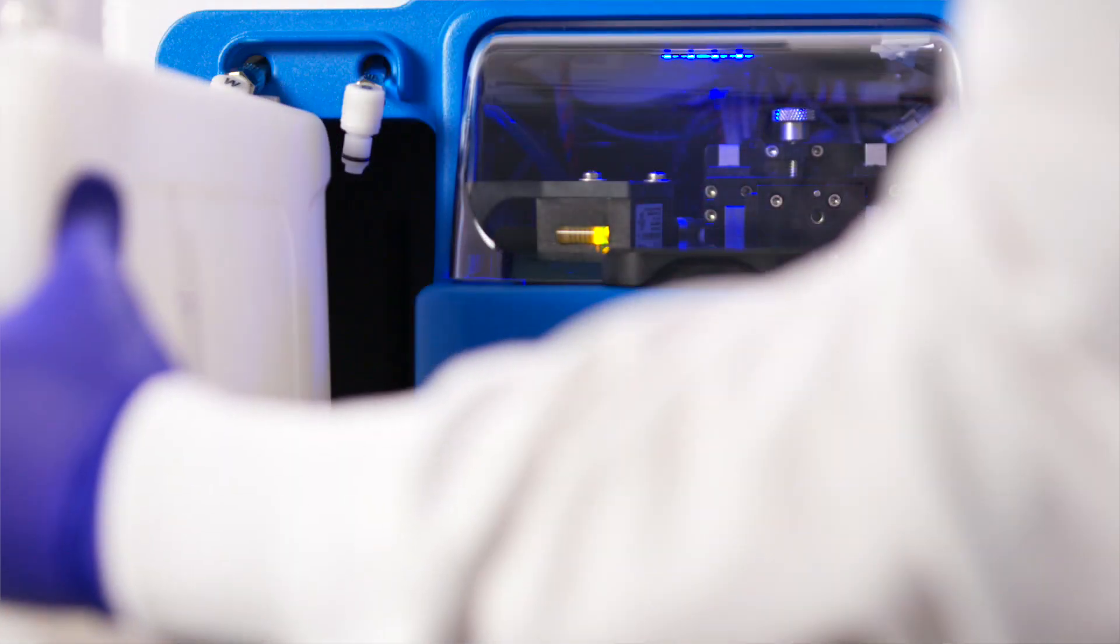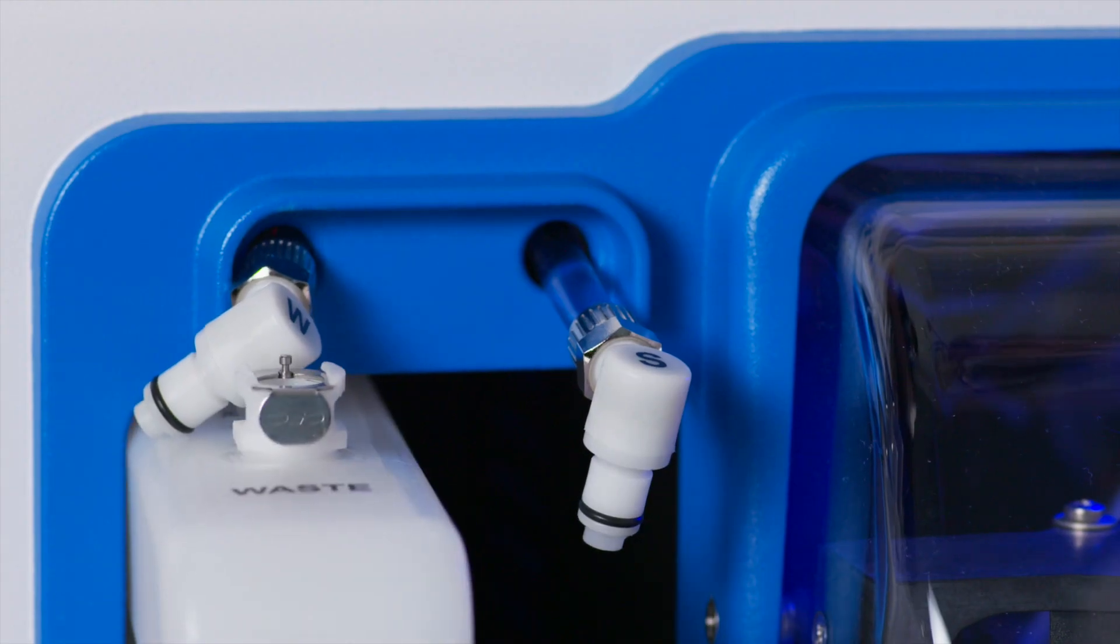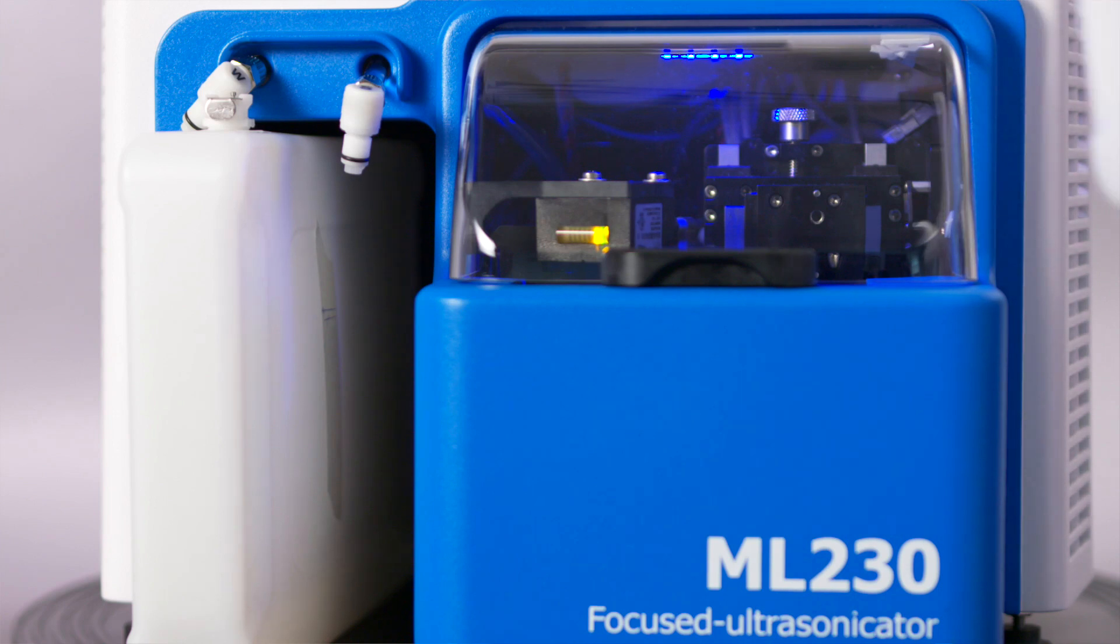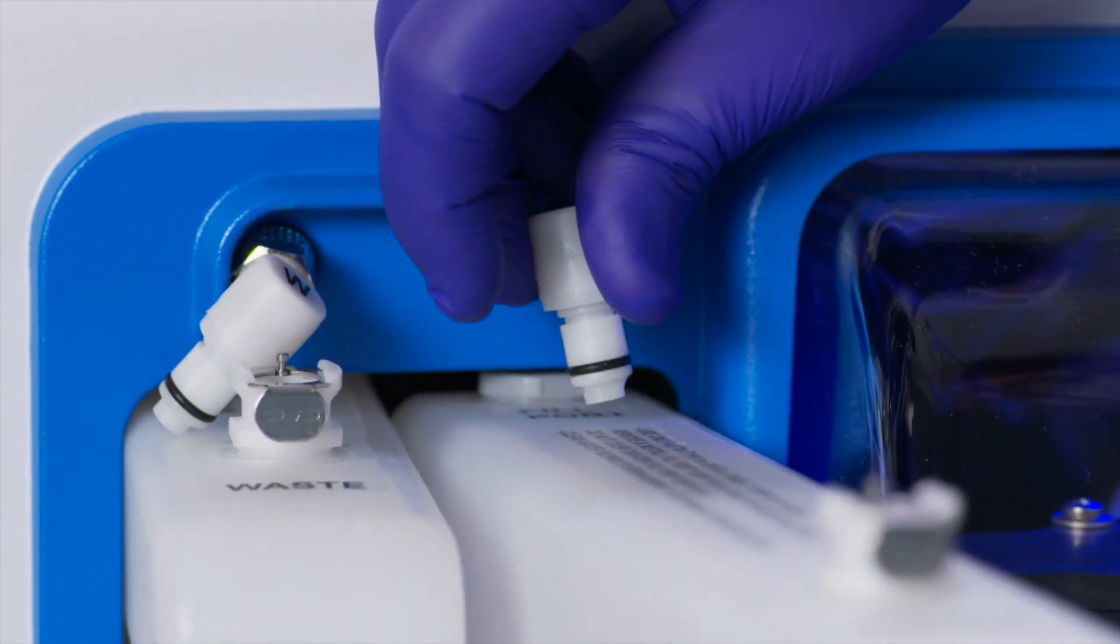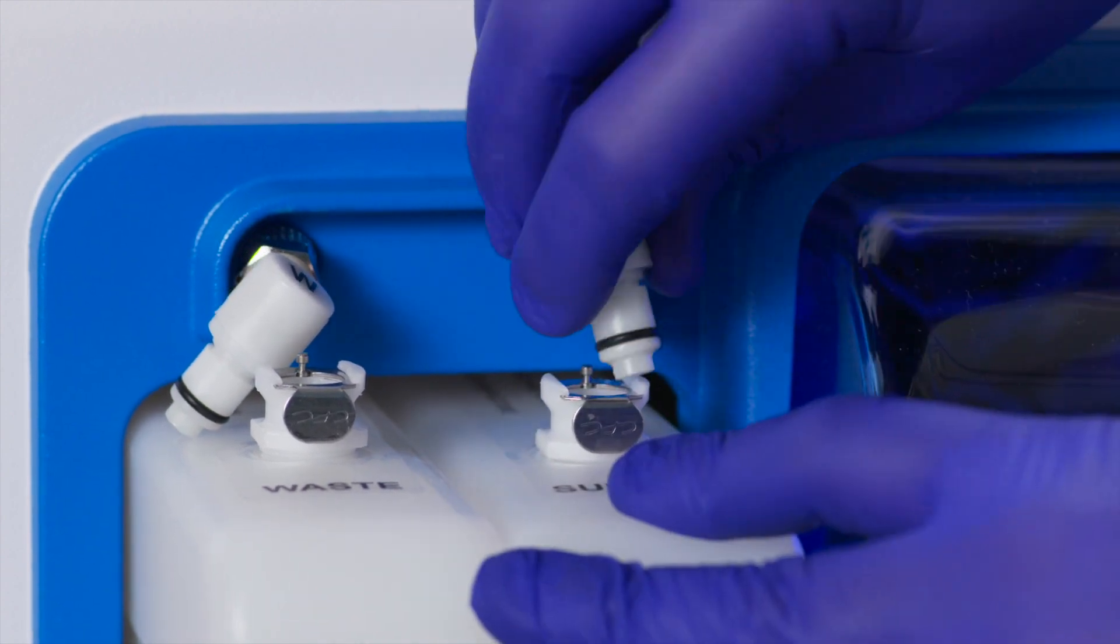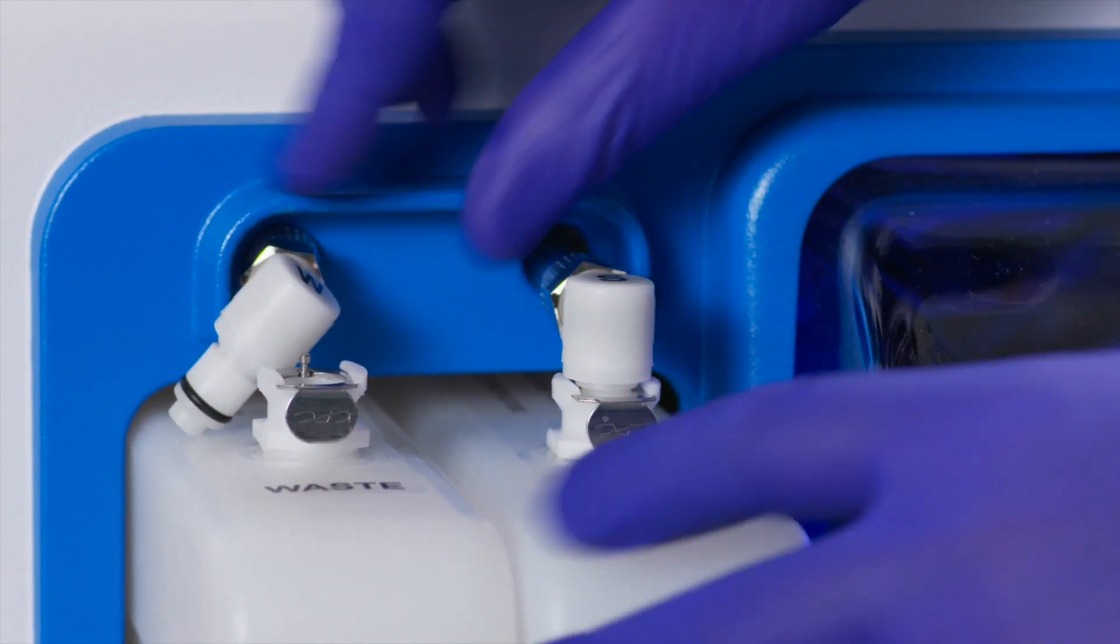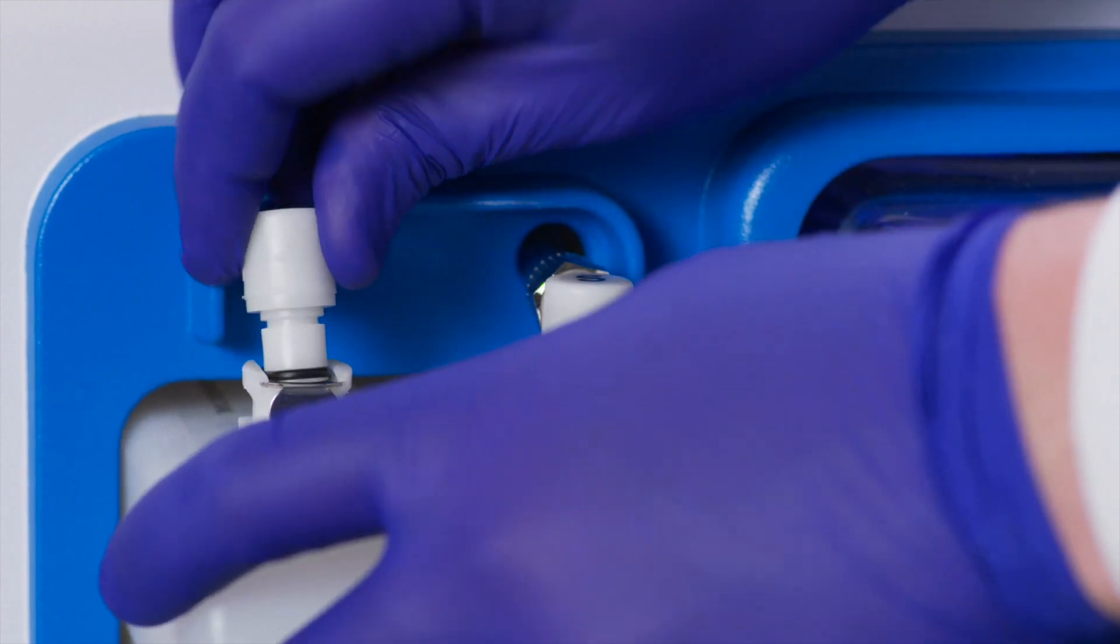Slide the waste bottle into the left side opening under the fitting marked W and slide the supply bottle, now filled with water, into the remaining opening on the right side under the fitting marked S. Press the fittings on both bottles until they click into place.